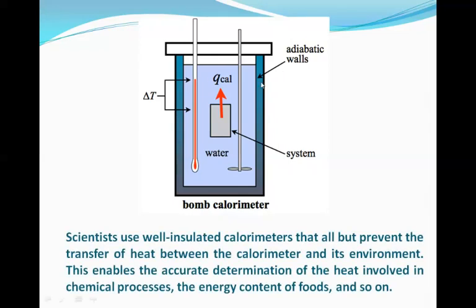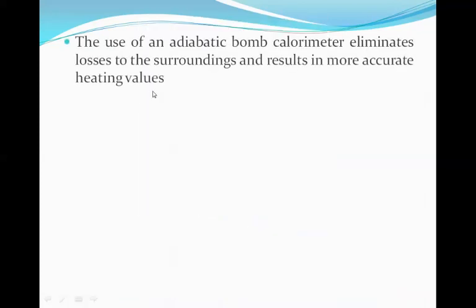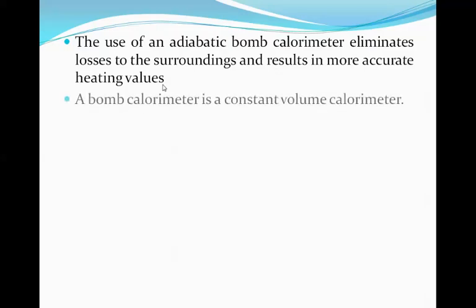In the diagram, it can be seen that the bomb calorimeter has an adiabatic wall, which is actually an insulator to heat. The system itself is closed. It has a thermometer and a mechanical stirrer. A system is placed here where the chemical or combustion process takes place, heat exchange occurs, and as a result the water gets heated up. Scientists use these well-insulated calorimeters that all but prevent the transfer of heat between the calorimeter and the environment, enabling accurate determination of the heat involved in a chemical process and the energy content of foods. The use of an adiabatic bomb calorimeter eliminates losses to the surroundings and the result is more accurate heating values as compared to the simple coffee cup calorimeter.